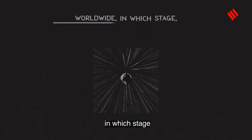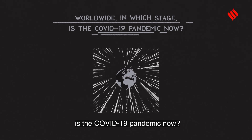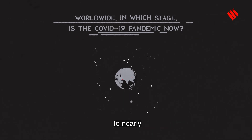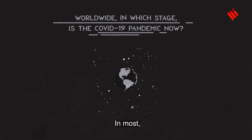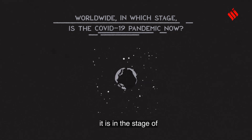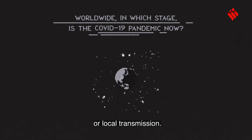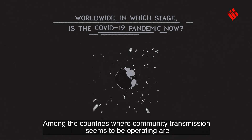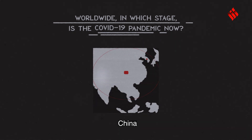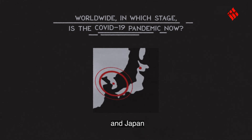Worldwide, in which stage is the COVID-19 pandemic now? The pandemic has spread to nearly every country on the planet. In most, though, it is in the stage of either imported cases or local transmission. Among the countries where community transmission seems to be operating are China, Italy, Iran, South Korea, and Japan.